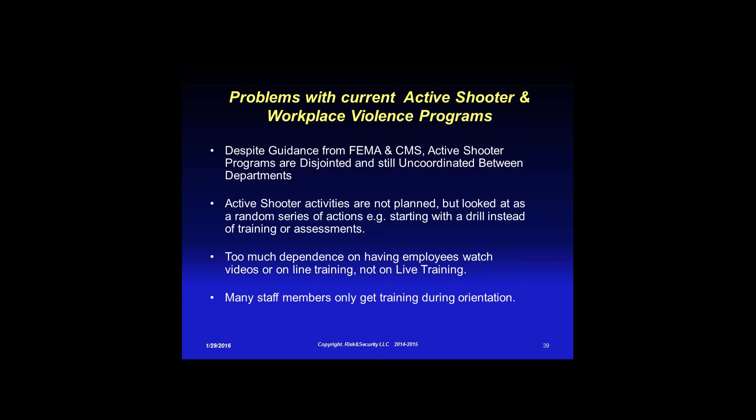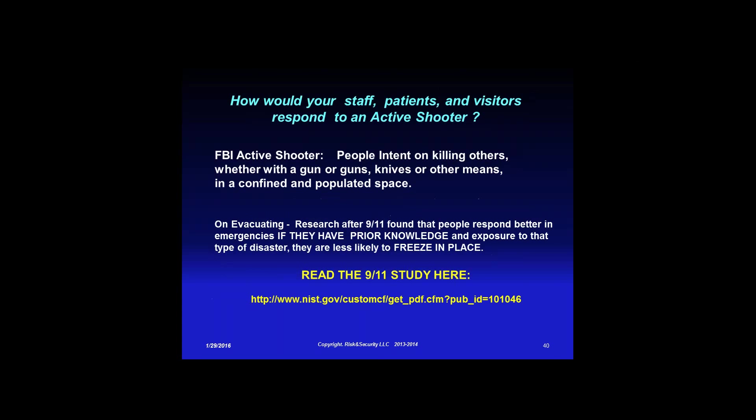One of the problems is that FEMA moved active shooter from security or HR into emergency management, so all the pieces of these programs are in different departments and are looked at as a random series of things rather than a total program. That's why I felt I had to put together a comprehensive program. There's also too much dependence on watching videos or online training, and staff only get security training during orientation. On your way home today, just think for a minute about how your organization would respond and what people you know would do if something like this happened.